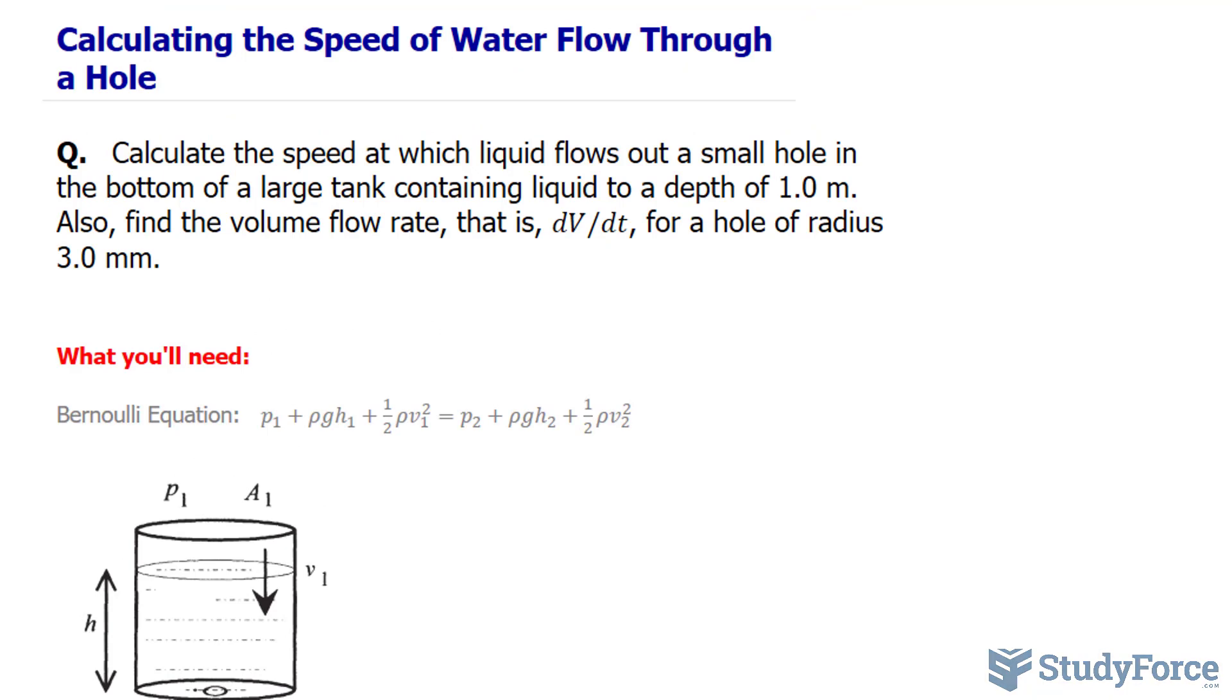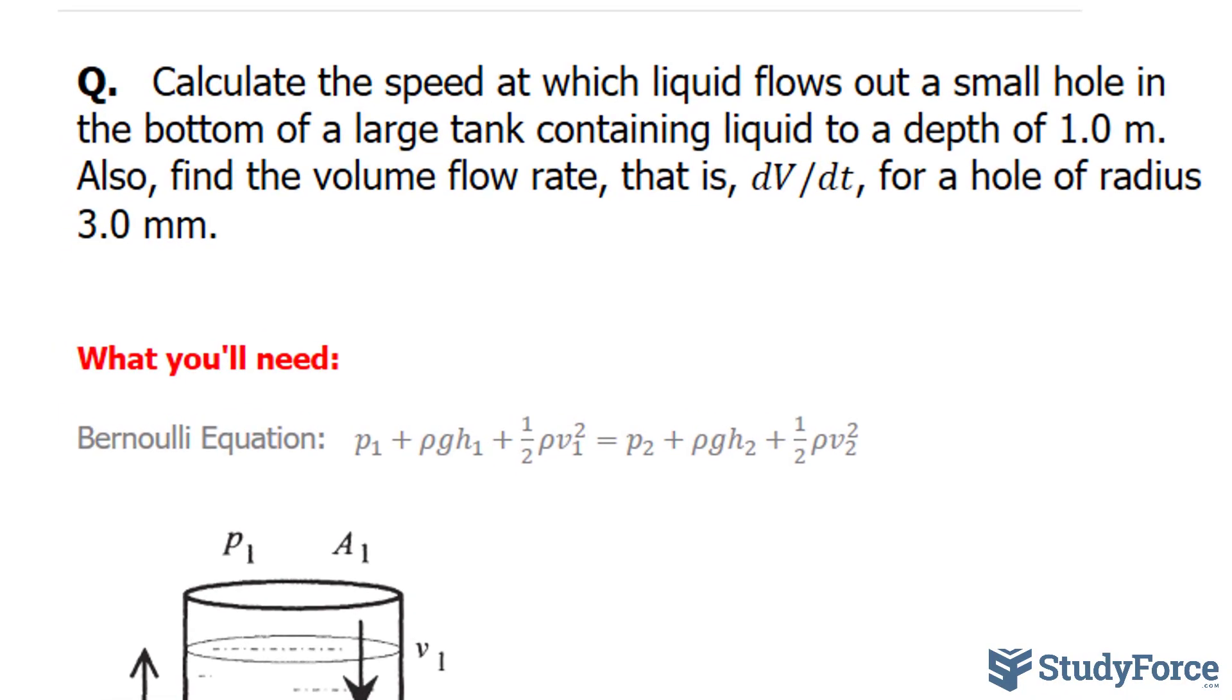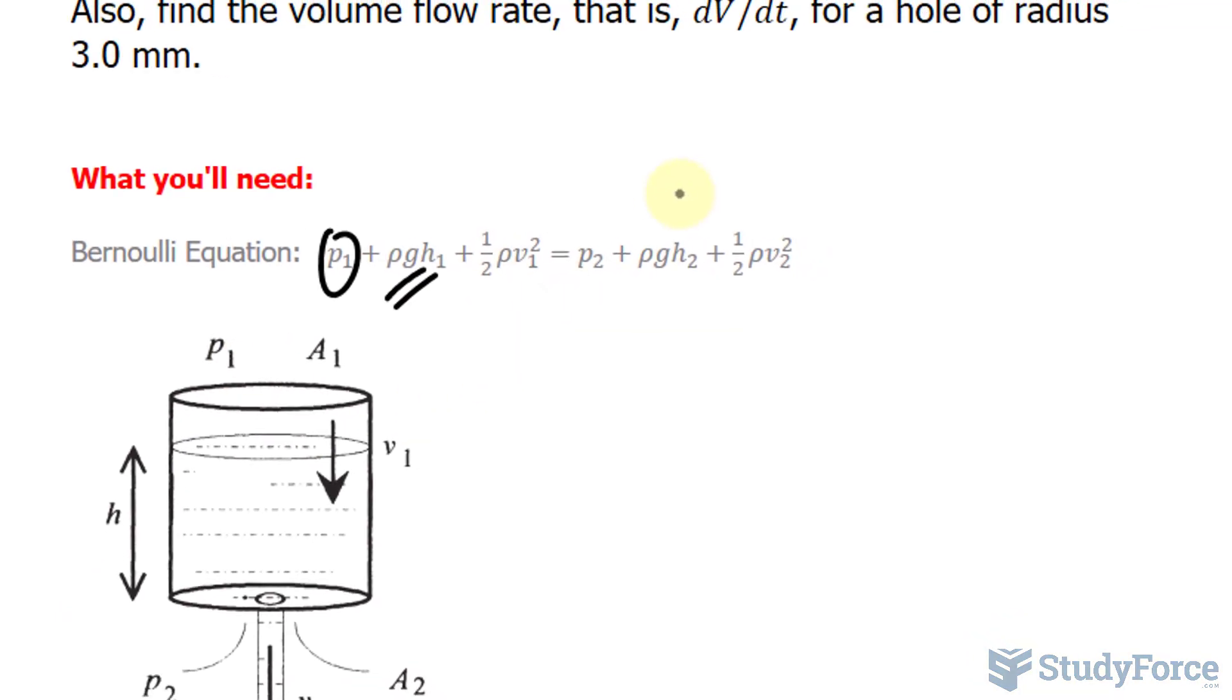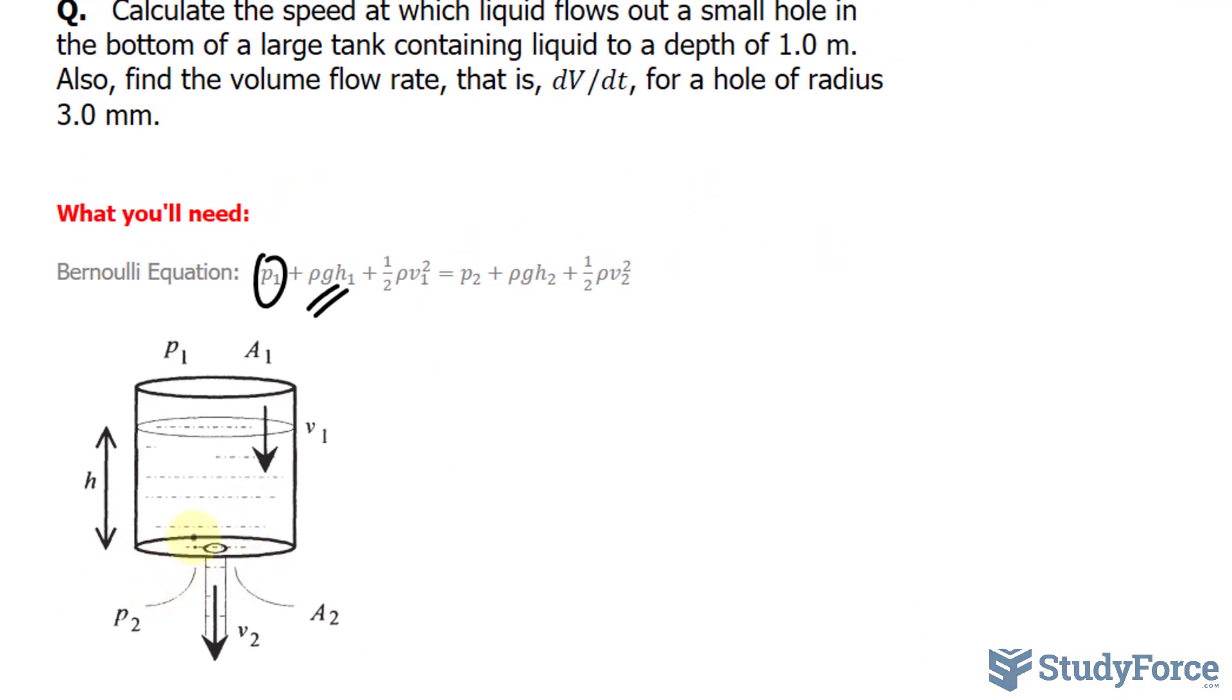So to answer this problem, we will look at Bernoulli's equation, which is this equation shown right here that relates three important things: the pressure at the top of the tank, that's this term, plus the potential energy per unit volume, and that's represented by this term of the equation, again at the top of the tank, and the kinetic energy per unit volume at the top versus where it is leaking at the bottom of the tank, and that's the right side of the equation.